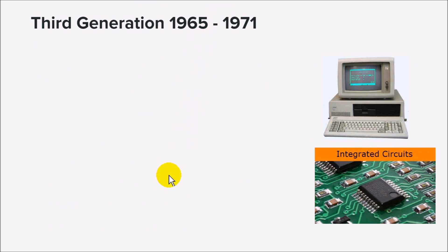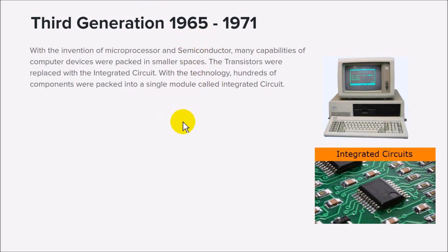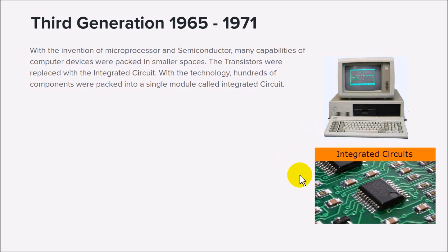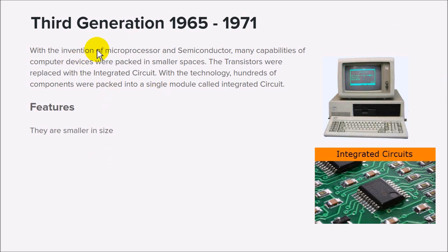The third generation, from 1965 to 1971, brought the third revolution in computer development. Semiconductors, capacitors, and transistors were replaced with processors — devices where instructions can be encoded to control the functions of the computer. This made computers very small. We started having a board known as the motherboard where all instructions can be encoded, which drastically reduced the size of computers, small enough to sit on a desk.